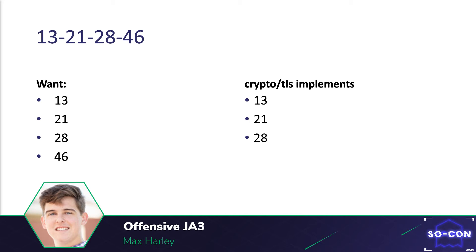We do throw an error if a user attempts to create a transport object with values not supported by crypto/TLS. In this example, we want to implement extensions 13, 21, 28, and 46. The problem is that crypto/TLS only implements 13, 21, and 28. Therefore, if we have a JA3 string that supplies these arguments as extensions, we won't be able to create a JA3 transport object that implements it.